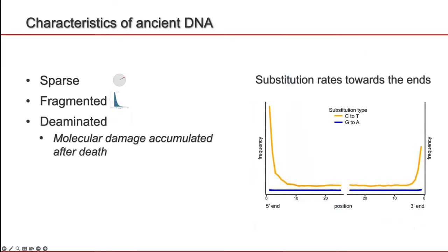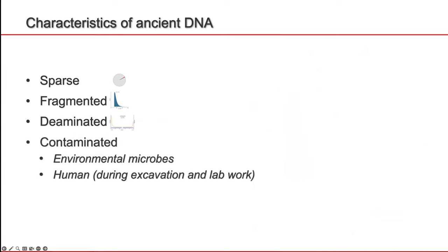Moreover, molecular damage accumulates and it's visible towards the ends of the fragments. Typically you see an increased substitution rate of C-to-T and G-to-A substitutions, depending on the library preparation protocol. Additionally, ancient DNA is often contaminated — first by environmental microbes because the dead body was lying in the soil, but also during excavation and lab work by other humans.